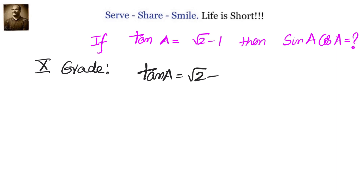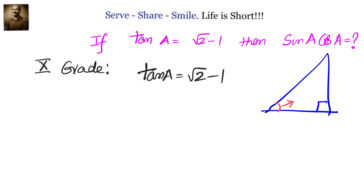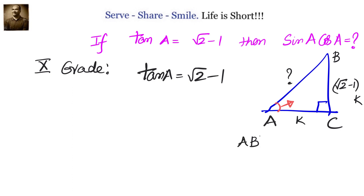Given tan A equals square root of 2 minus 1, let's create a triangle where we have A as one of the vertices of triangle ABC, right-angled at C. Looking from A, the opposite side is root 2 minus 1 and the adjacent side is 1. They are in the ratio of root 2 minus 1 to 1, so we can take them as root 2 minus 1 into k and 1 into k.